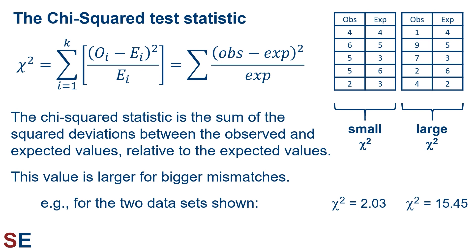Looking at our two data sets from before, the chi-squared values would be 2.03 and 15.45. You can see how the values clearly line up with the amount of mismatch.